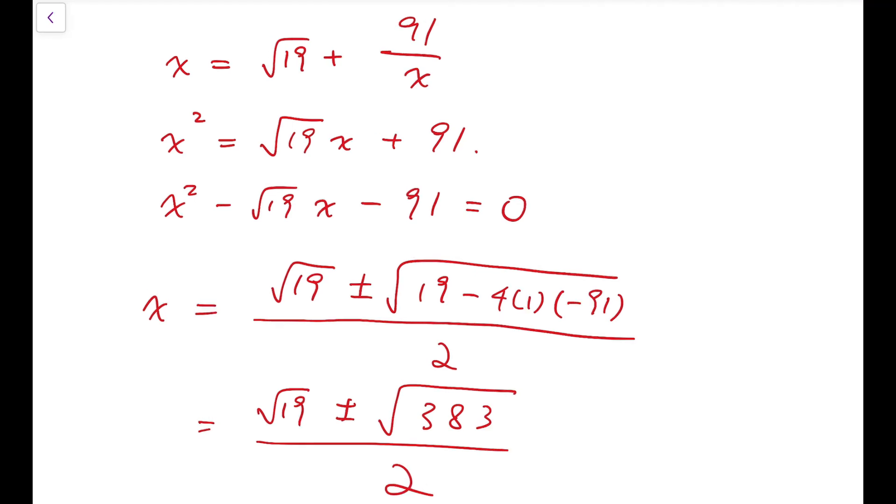So now we know that these two numbers are the only possible answer to our problem. But it's given that we have let x to be this expression, this continued fraction, and all entries inside the continued fraction are positive numbers. So we still need to check whether the negative version—root 19 subtracted by square root of 383 all divided by 2—is also a solution.